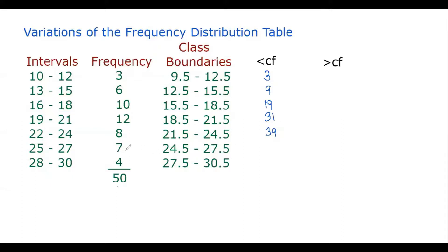Then plus 7, this becomes 46. And plus 4, becomes 50. So this is your less than cumulative frequency distribution.